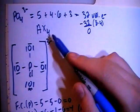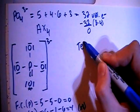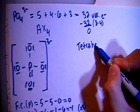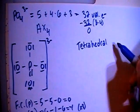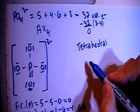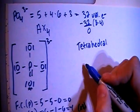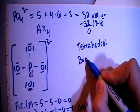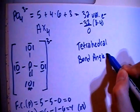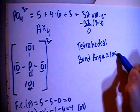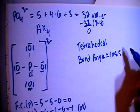Now we can talk about the shape of this structure. It is going to be, because it's AX4, that means tetrahedral. Tetrahedral shape, and when you have that shape, the bond angles are going to be approximately 109.5 degrees.